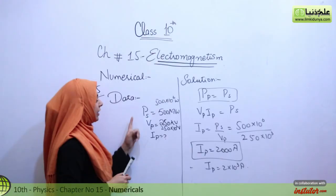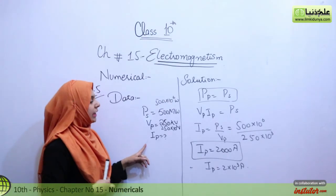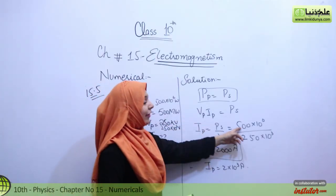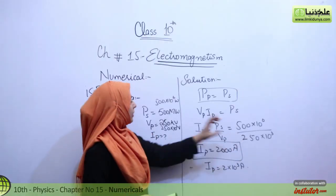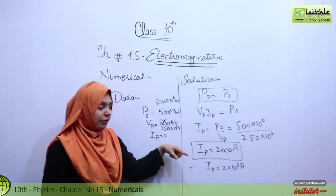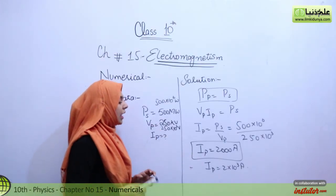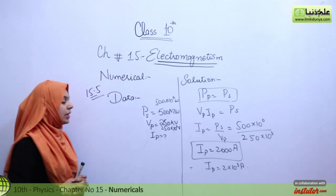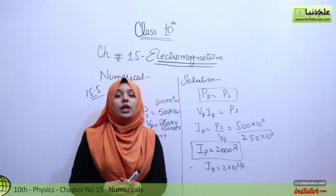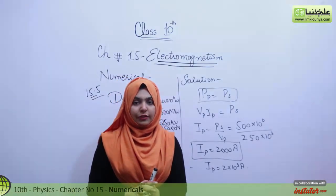So in this numerical, power was given and VP was given; we just needed to find IP. We applied the formula, rearranged it, and since the values were not in base units, we first converted them and then substituted to get IP equals 2,000 ampere, or 2 × 10^3 ampere. That was our numerical number 15.5.